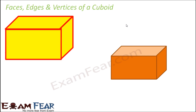Whenever we talk about a three-dimensional shape, we don't just talk about angles, sides and vertices, because there is a lot more to a three-dimensional object. The basic parts of any three-dimensional object are faces, edges and vertices.